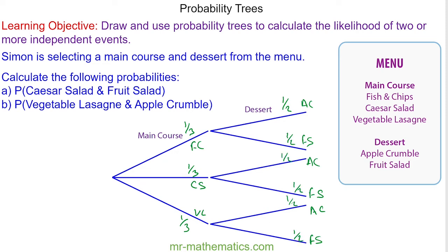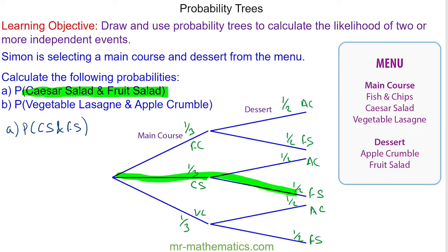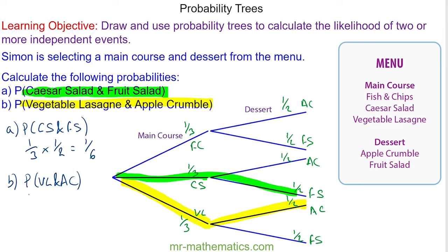Let's calculate the probability of a Caesar salad and a fruit salad. A Caesar salad is one third and a fruit salad is one half, so the probability of this combination is one sixth. The probability of a vegetable lasagna and an apple crumble — the vegetable lasagna is one third and the apple crumble is one half — so again that is one sixth.